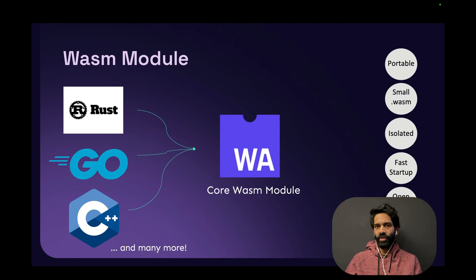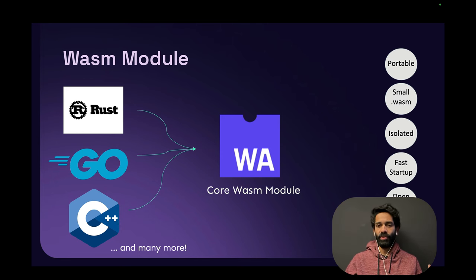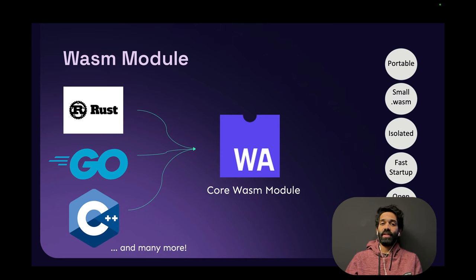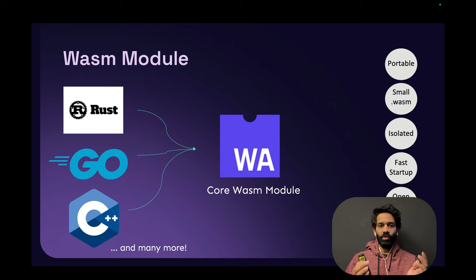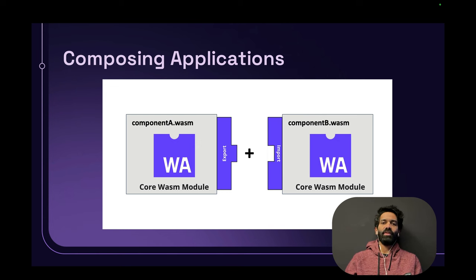Essentially any WASM server-side app is made up of WebAssembly modules. These can be written in things like Rust, Go, C++, and many more, and they're compiled to a core WASM module. Each of these modules is portable, their binary size is very small — saving you money and carbon footprint — isolated by default, with very fast startup times and no cold starts. These are completely open standards, so you can run them anywhere. With the recent launch of the component model, one of these modules can work with another almost seamlessly, so you can compose applications.